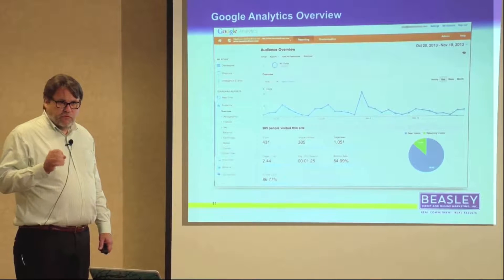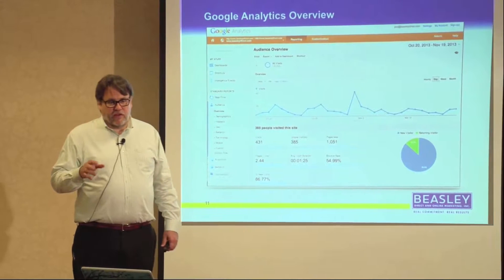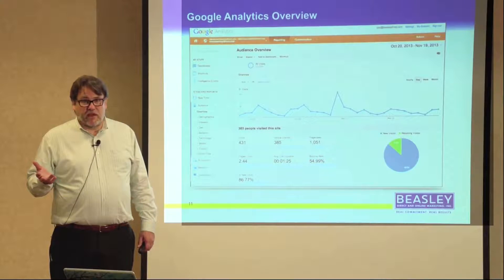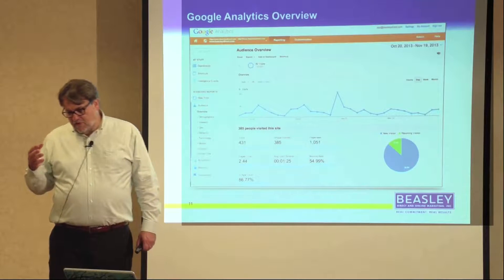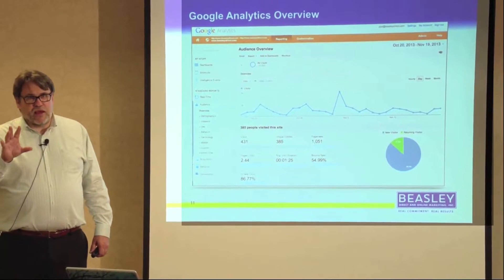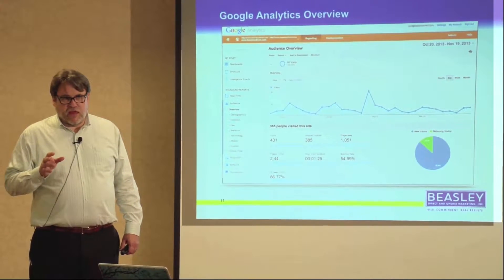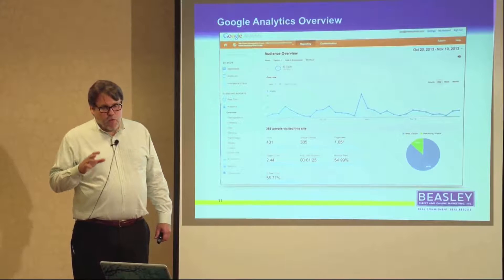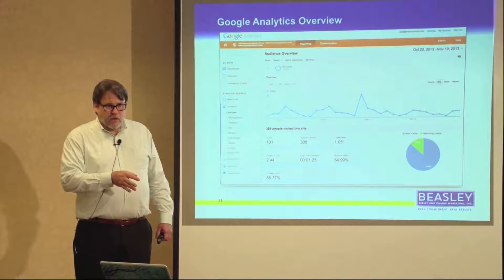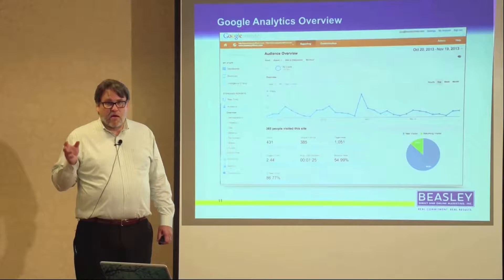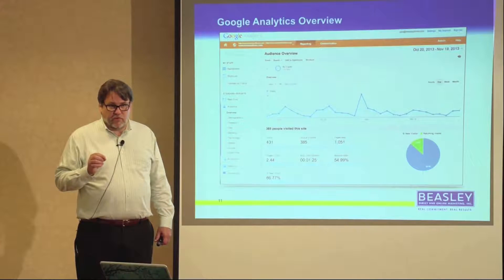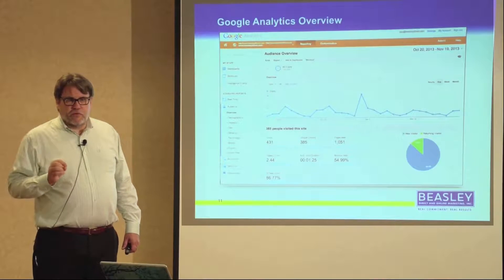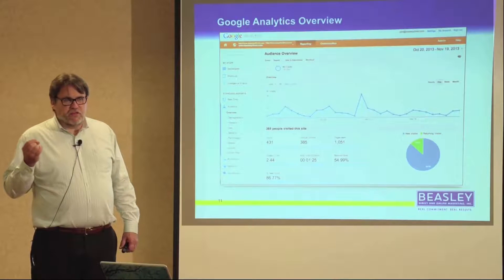The way Google, WebTrends, and Adobe Marketing Cloud (Omniture) track visitors is by placing a small data file called a cookie on your browser. It records that you came to the website and which pages you looked at. If you're registered, it captures that information from your first visit. Different analytics packages capture different information in the cookie. Cookies expire — most analytics packages expire cookies after 60 days, so if you visit in January and return in July, you'll likely be counted as two different visitors.